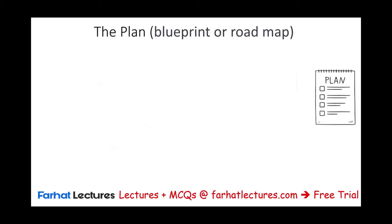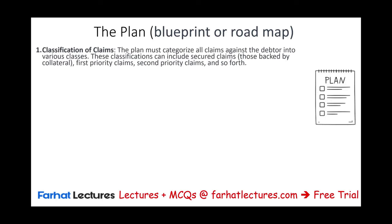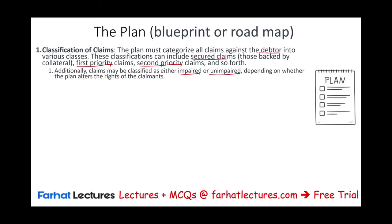So what does the plan include? It should be a blueprint and roadmap to exit. First, the classification of claims — the plan must categorize all claims into various classes including secured claims backed by collateral, first priority claims, second priority claims, and so on. Claims may be classified as either impaired or unimpaired, depending on whether the plan alters the rights of the claimant.